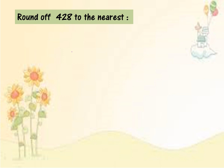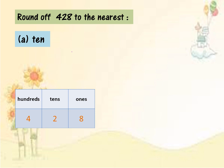Look at this question: Round off 428 to the nearest 10. I fill in 428 in a place value chart. When you want to round off to the nearest 10, remember the first step — underline the digit at the place value of 10. Where is 10? Digit 2. So underline it. Second step: circle the digit on the right side. Bulatkan digit di sebelah kanan — it's 8.